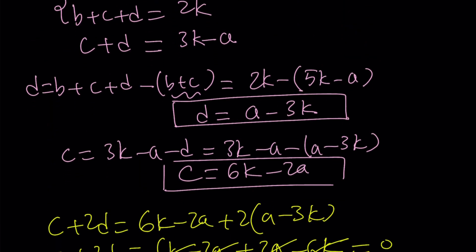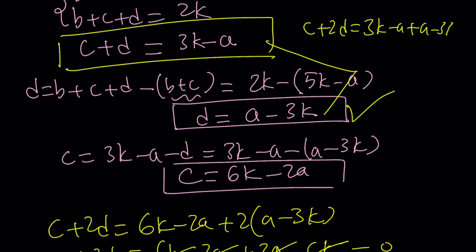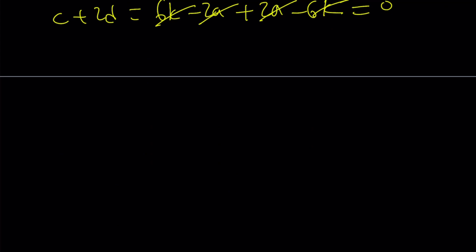But there is an easy way to do this. Think about it. Once I got the value of d from here, I'm looking for c plus 2d. So I can use c plus d and d, add these up. That's going to give me c plus 2d, and that'll be 3k minus a plus a minus 3k. Notice that those are opposites. Everything is going to cancel out, and you're going to get zero in a slightly different way.